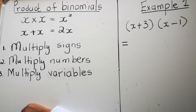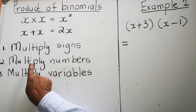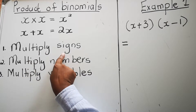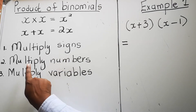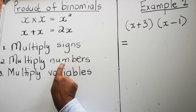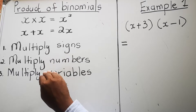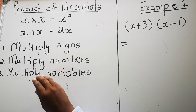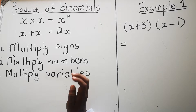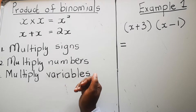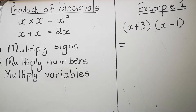There are three steps you must follow when finding the product of binomials. Step one: multiply the sign first. Step two: multiply the numbers. Step three: multiply the variables. We're going to do this very slowly and follow these three steps with an example. I'll show you example one, then I'll write example two for you to try yourself.